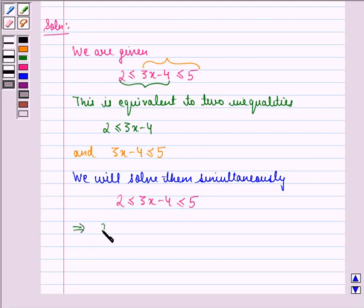That becomes 2 plus 4 is less than or equal to 3x minus 4 plus 4, less than or equal to 5 plus 4. This simplifies to 6 is less than or equal to 3x, less than or equal to 9.